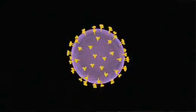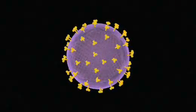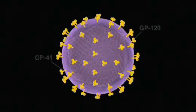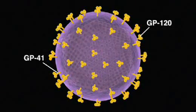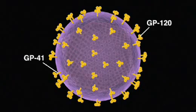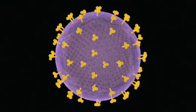The outer shell of the HIV particle is called the envelope. It is studded with sugar protein spikes that allow the virus to attach itself to specific molecules called CD4 receptors on some human cells.